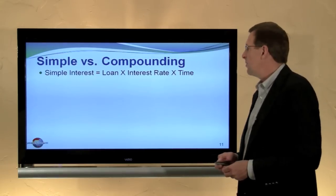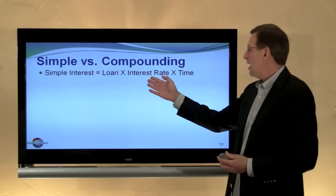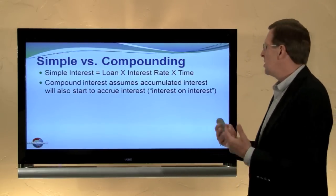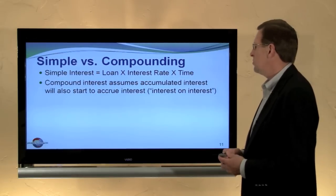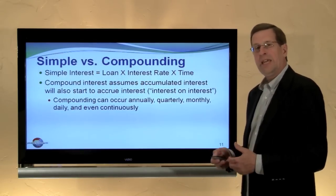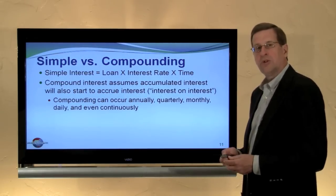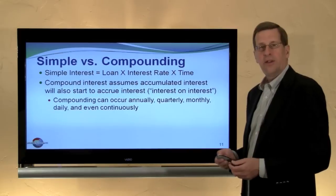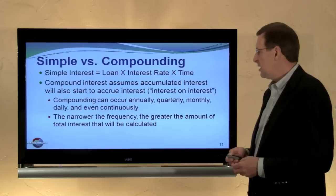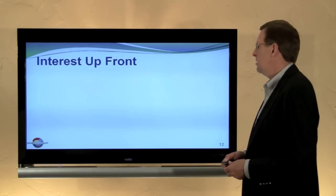We also need to consider simple versus compound interest. Simple interest is just the principal times the interest rate times the time. Compound interest assumes we pay interest on accumulating interest. Compounding can occur annually, quarterly, monthly, daily, or even continuously using calculus. Obviously, with compound interest more accumulates during a similar period than under simple interest. The higher the frequency of compounding, the greater the amount of interest associated with the note.